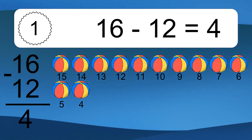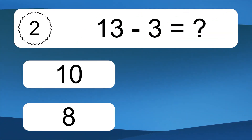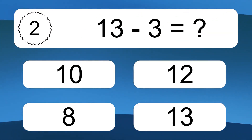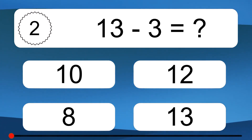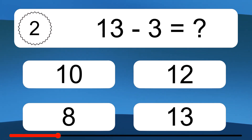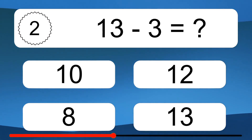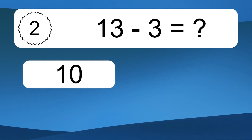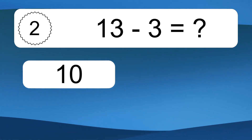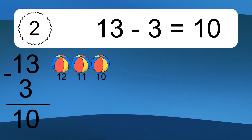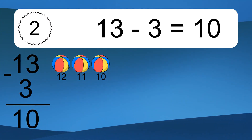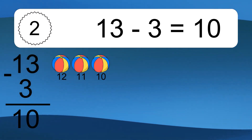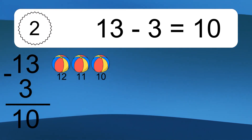13 minus 3 equals what? 13 minus 3 equals 10. Let's count it. 12, 11, 10.